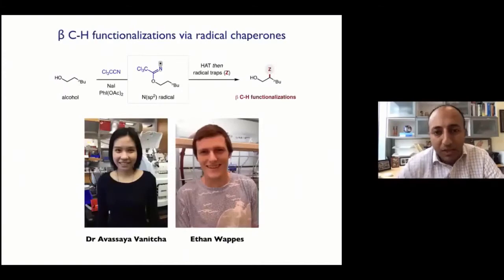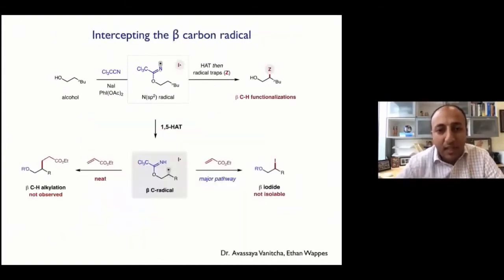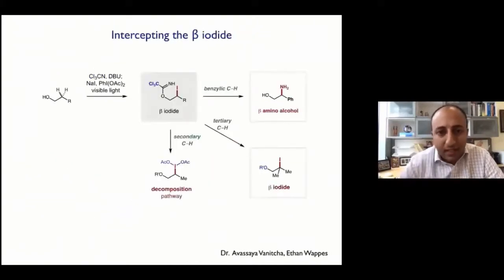But what I wanted to show you was one last story, where we wanted to trap this nitrogen-centered radical with something besides a C-N bond. And this is work by Dr. Avaseya Vinitja and Ethan Wapis. And it really, it came out of thinking a lot about this system and how we break the N-I bond, and that I radical is still hanging around. And so looking at the pathway on the bottom left here, we thought a simple radical trap like an acrylate should be able to generate C-C bond formation. To our surprise, however, even a neat acrylate, as solvent, we could never generate that C-C bond. What we always thought we observed was C-I bond formation, albeit it wasn't isolable in the secondary case.